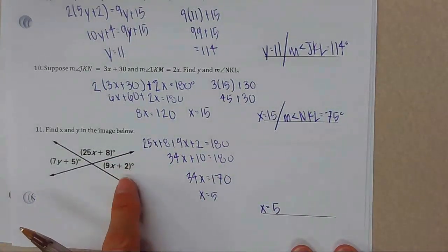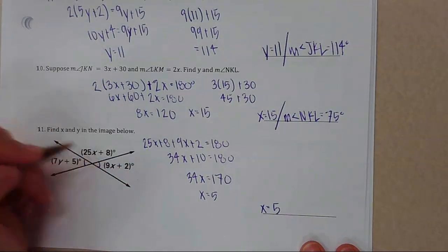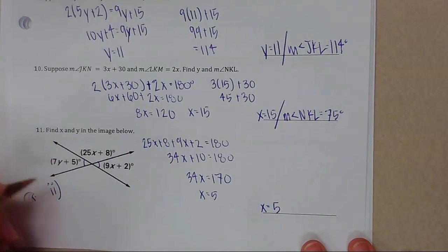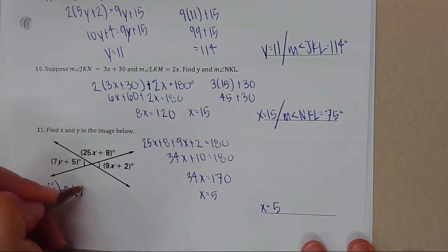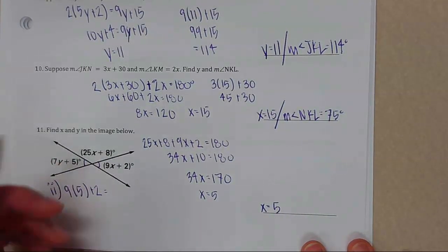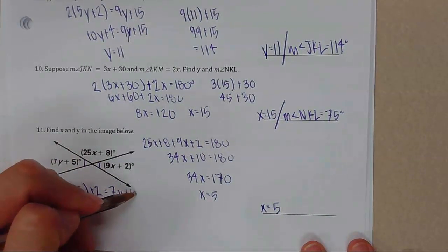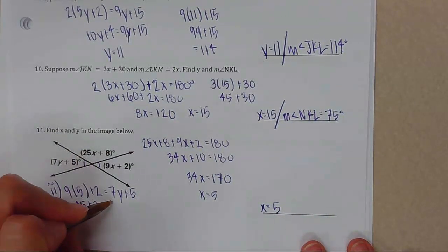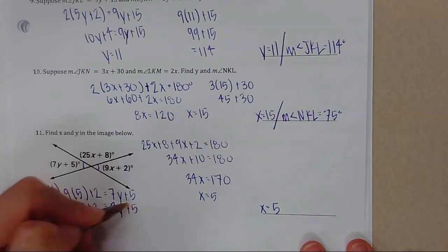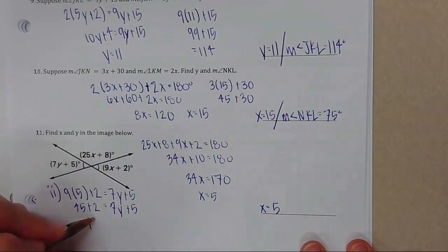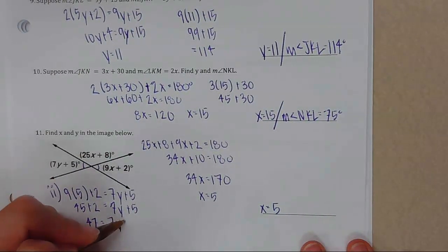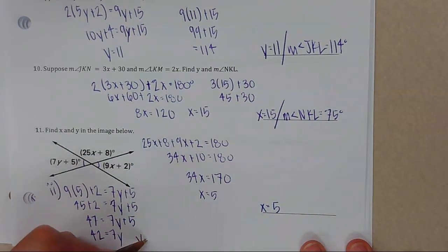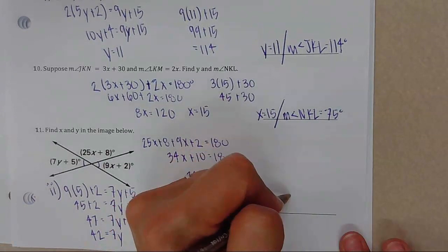Now I'll plug x = 5 into 9x + 2 because these are vertical angles and congruent. So 9(5) + 2 = 47, set equal to 7y + 5: 47 = 7y + 5, so 42 = 7y and y = 6.